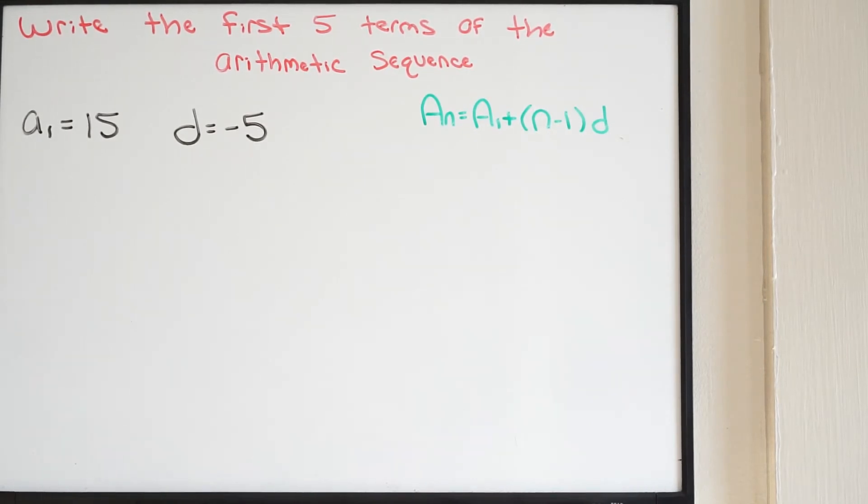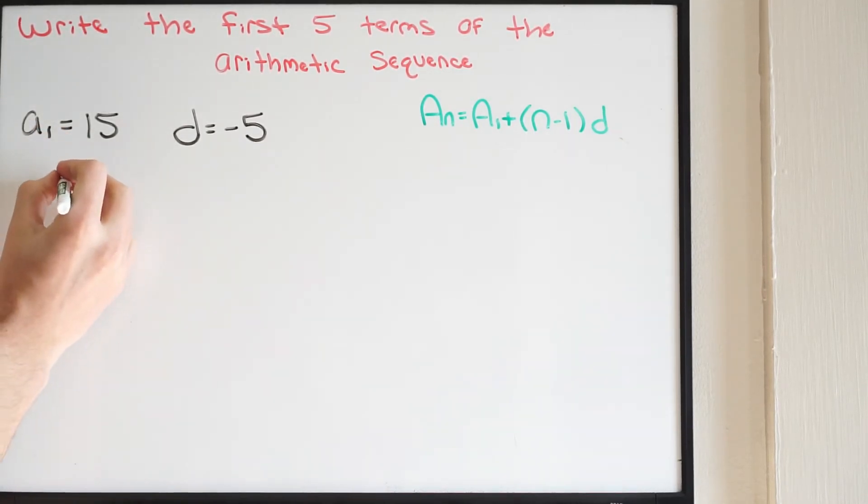So in order to find the first five terms of this arithmetic sequence, we first start with our first term, in this case A of 1, which is going to be 15. We know that our common difference between all our terms is going to be negative 5.